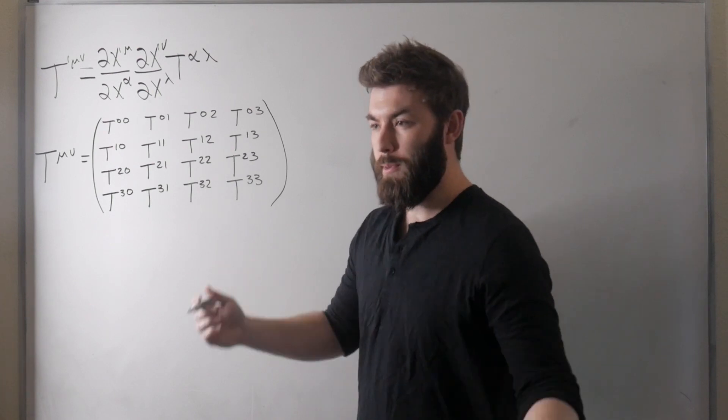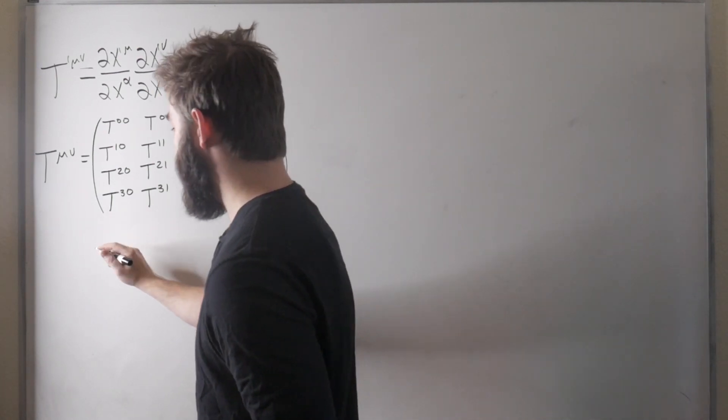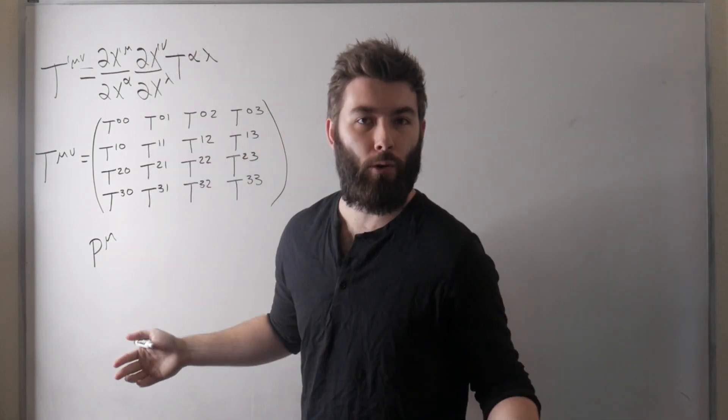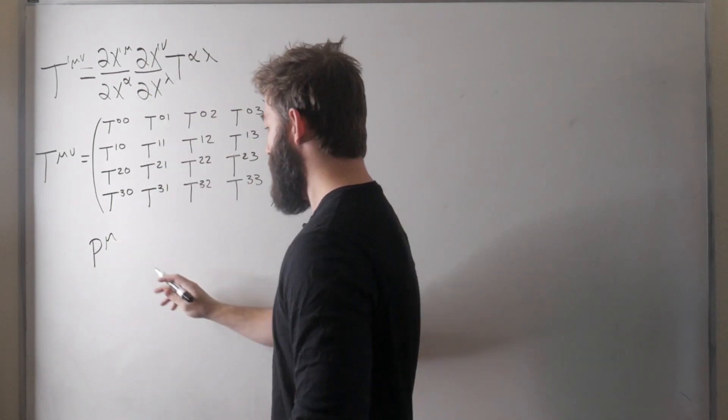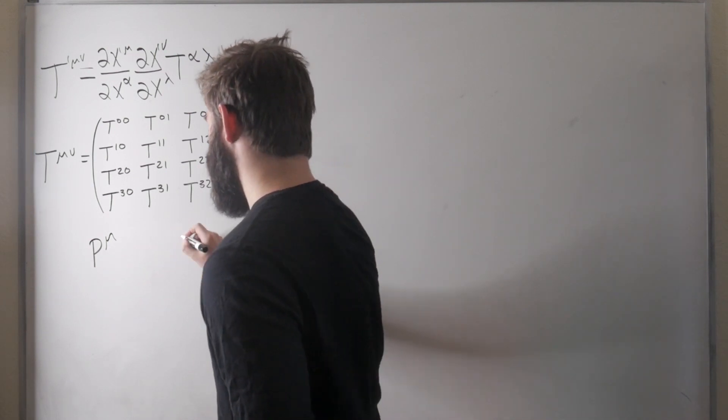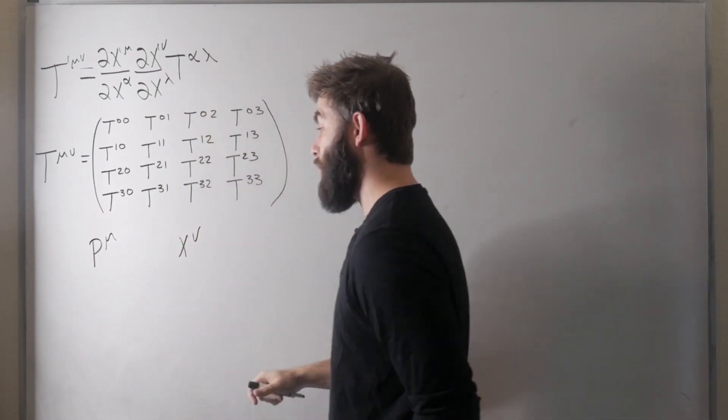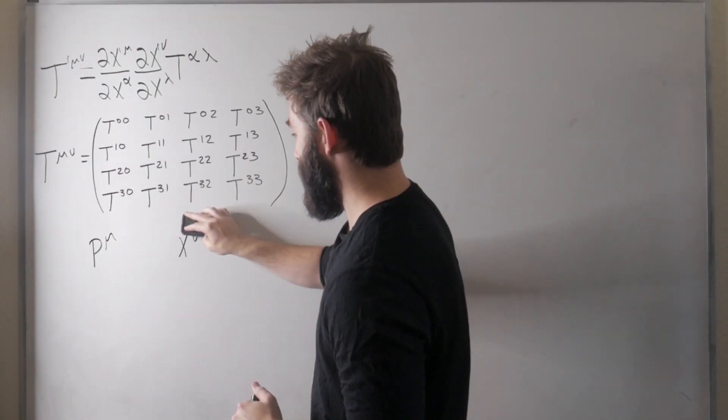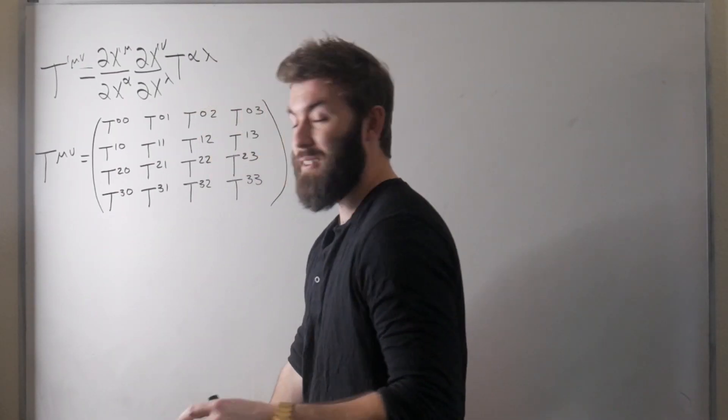So formally it's defined in terms of a flux of four momentum p mu, four momentum because it has four components transforms as a four vector, so the flux of four momentum p mu across some surface at constant x nu. That's helpful right? No okay let's try to make that a little bit more tangible because at first that didn't really mean anything to me either.